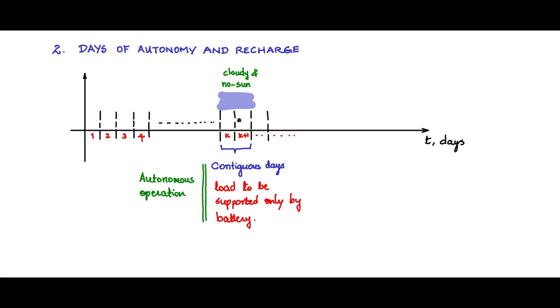It means it is operating by itself without the help from solar or the PV. Which means the battery has to be rated to support the load for as many number of days a particular place needs. So this is called the days of autonomy and we will give a symbol na.